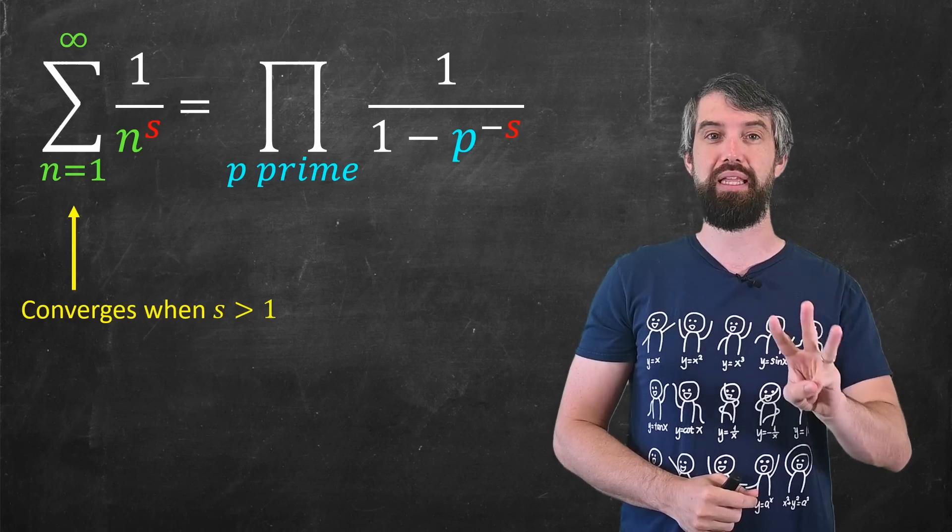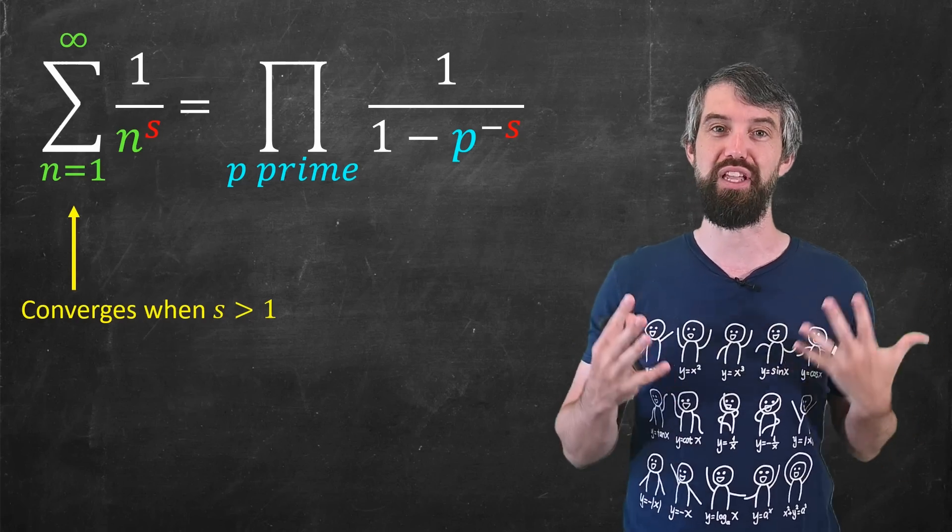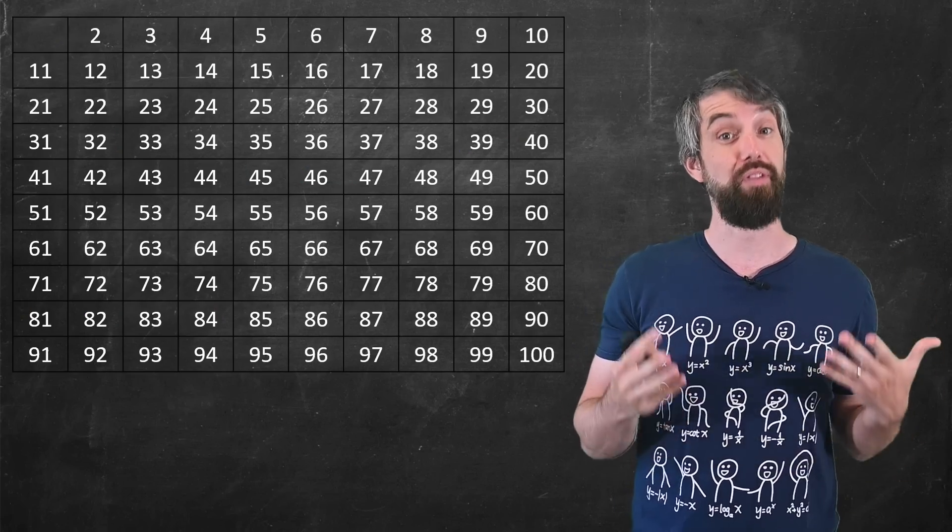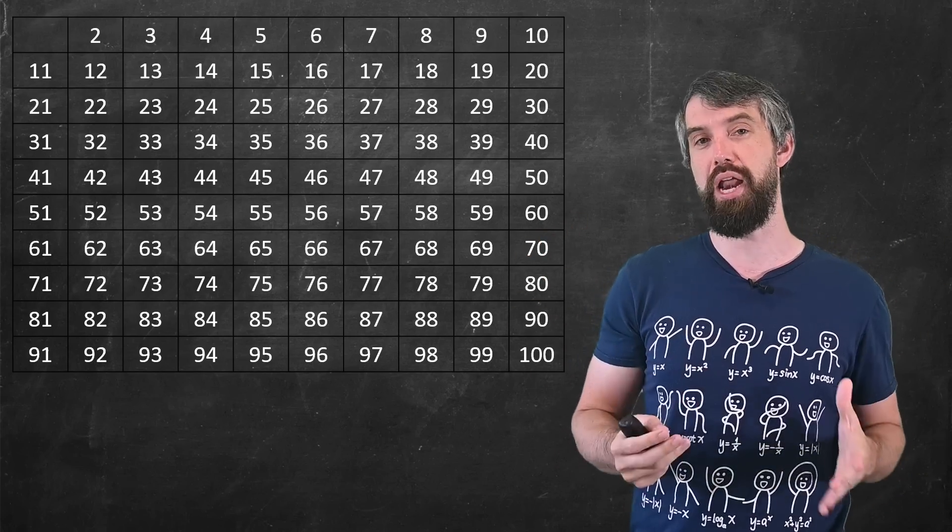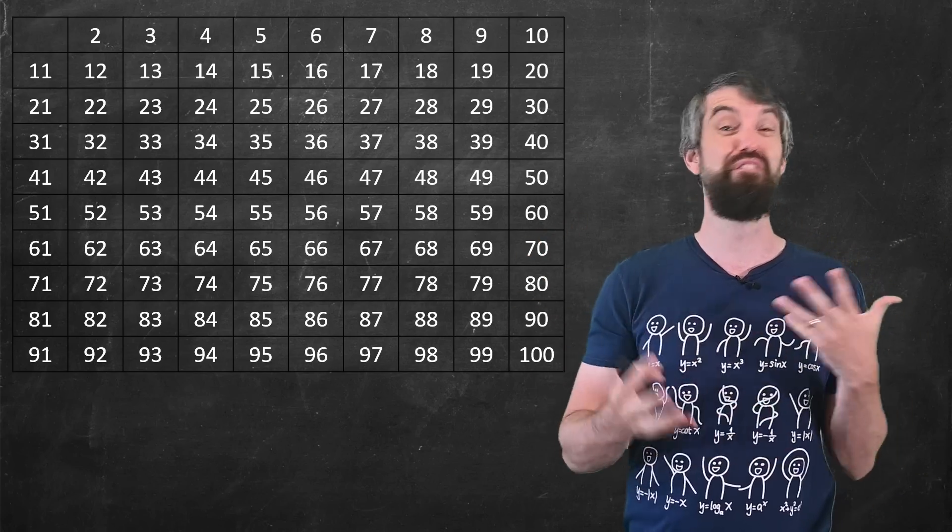So my third reason that I really like this is that it just has a lovely proof. You might have heard before about the sieve of Eratosthenes. Let me just put up all the numbers between, say, 2 and 100. And I'm going to try and filter these.